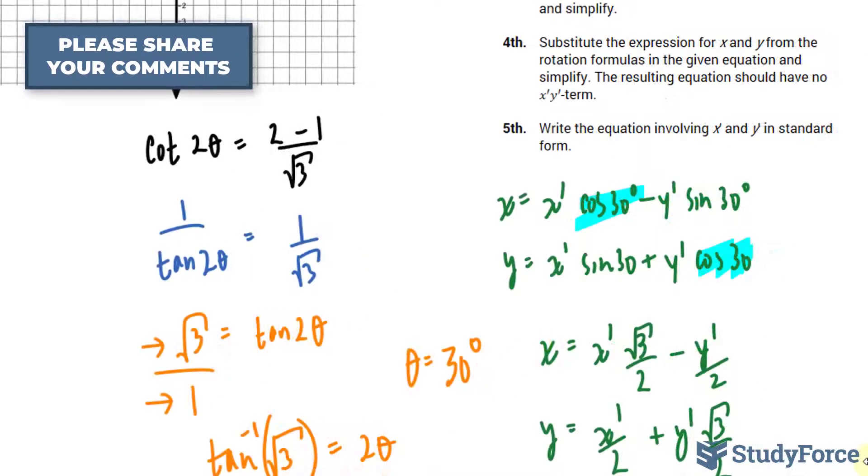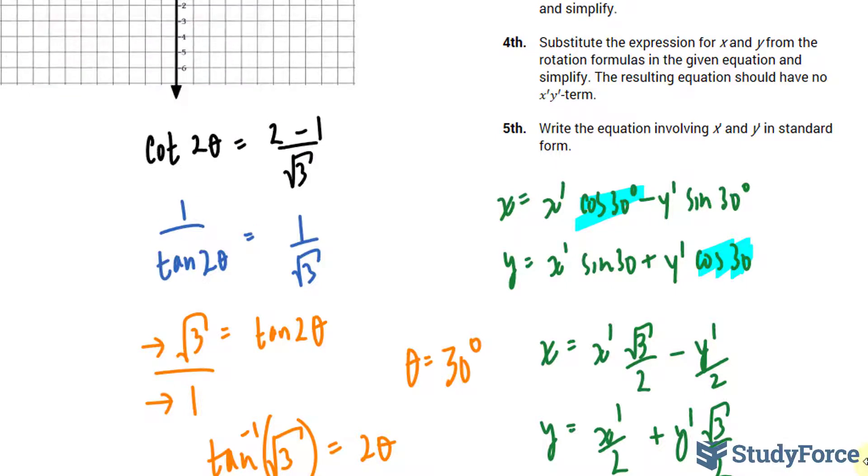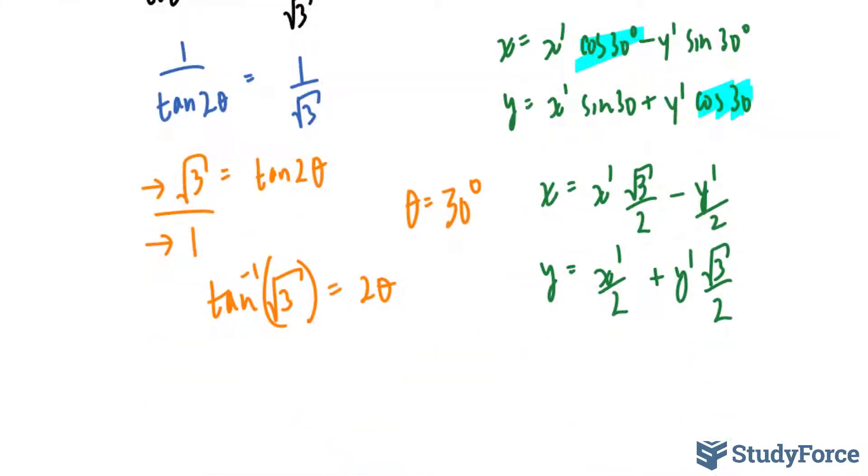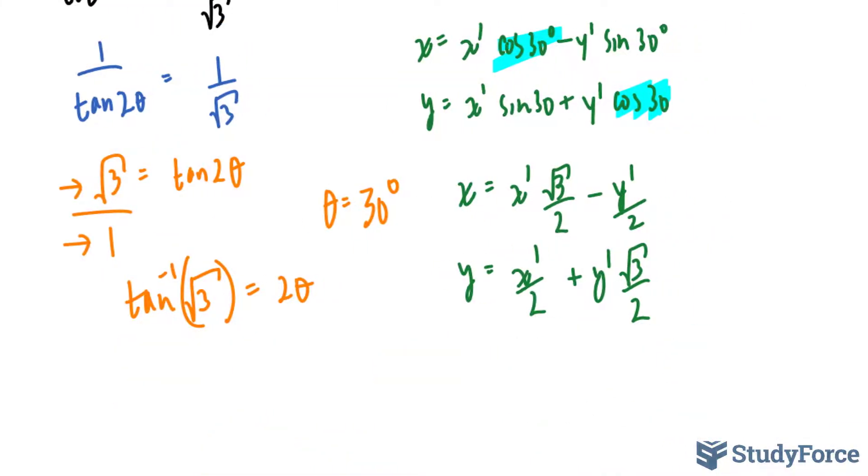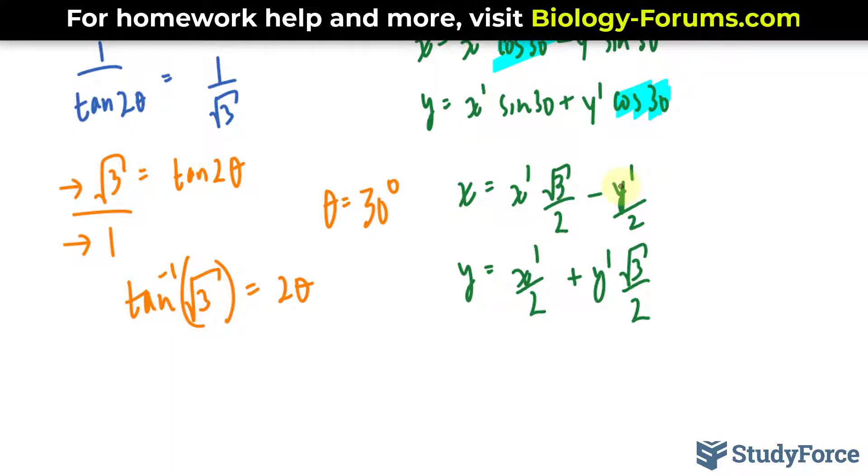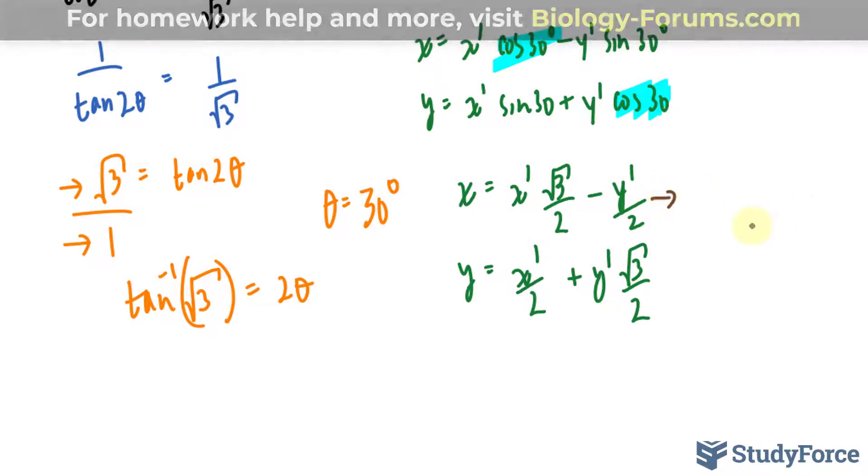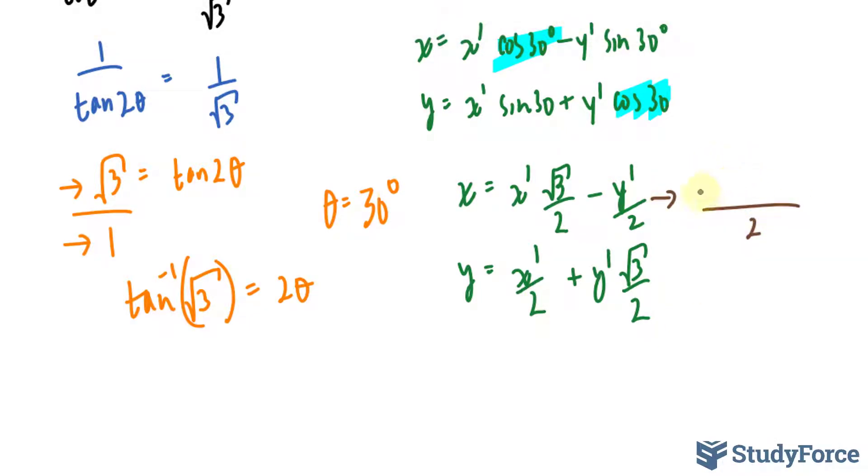Let's move on to step number 4. Step number 4 says substitute the expressions for x and y from the rotation formulas in the given equation and simplify. So technically, we're going to take these two expressions and substitute them back into our original equation. So let's go ahead and do that. And before I do, I just want to simplify these two expressions, something that I should have done in the previous step. Notice that these two terms both have a denominator of 2, which means that I can write them out as 2 as a common denominator. So here, x prime square root of 3 minus y prime, that's x, and y will be x prime plus y prime square root of 3 all over 2.